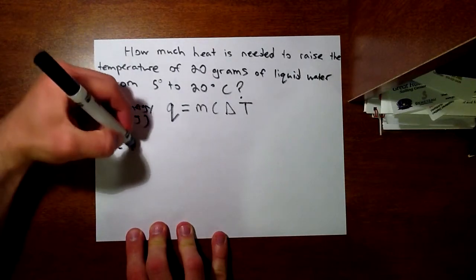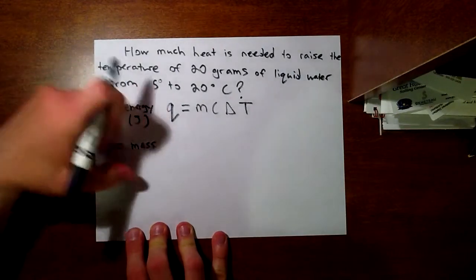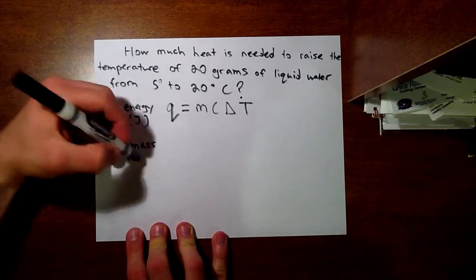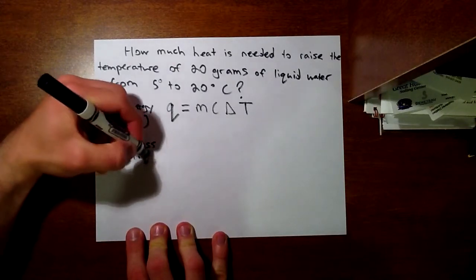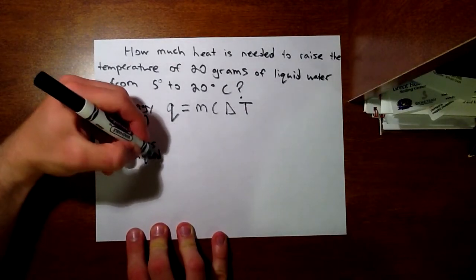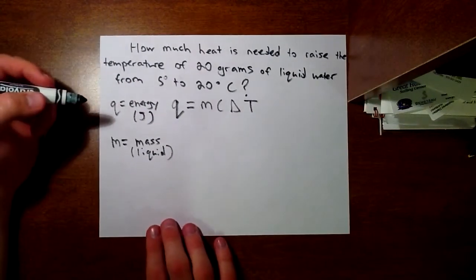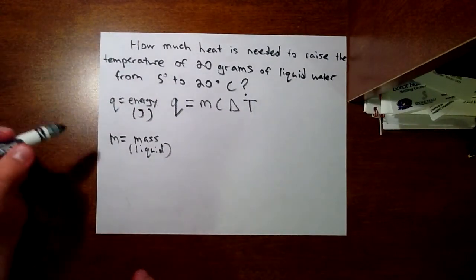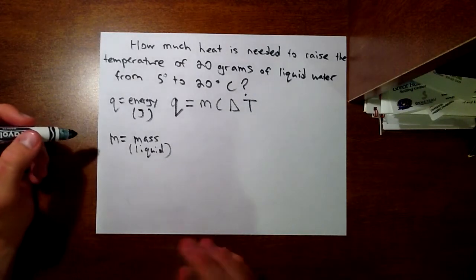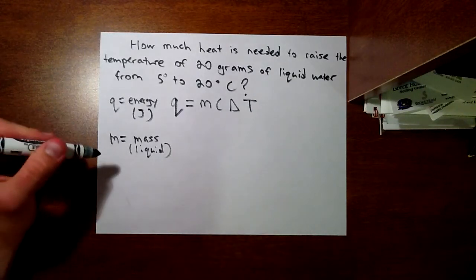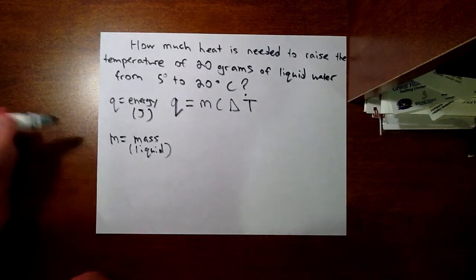The m represents the mass, and it's an important note that it's the mass of the liquid, not anything you're adding to it. In this problem, you don't run into this issue, but in other problems you might. They'll ask if you add a piece of aluminum, how much heat is needed, and you don't include the mass of the aluminum. You just include the mass of the water.